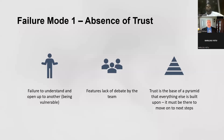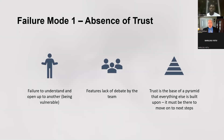Thinking back to Lencioni's five dysfunctions, the first — the base of that pyramid — is absence of trust. When you're in an organization with that dysfunction, you have a failure to understand what's going on with others on the team, and you also fail to open up, be vulnerable, and ask for help. You need to build that sense of security and trust to move forward. Because of that lack of trust, there often aren't constructive debates — you're either not debating or you're pointing fingers and assigning blame.